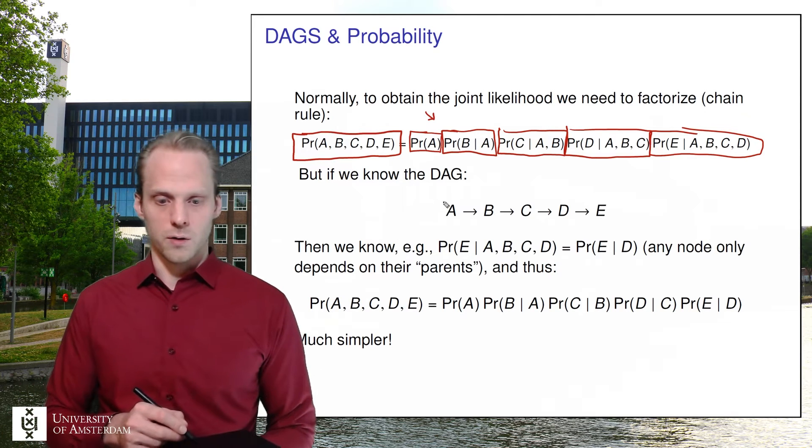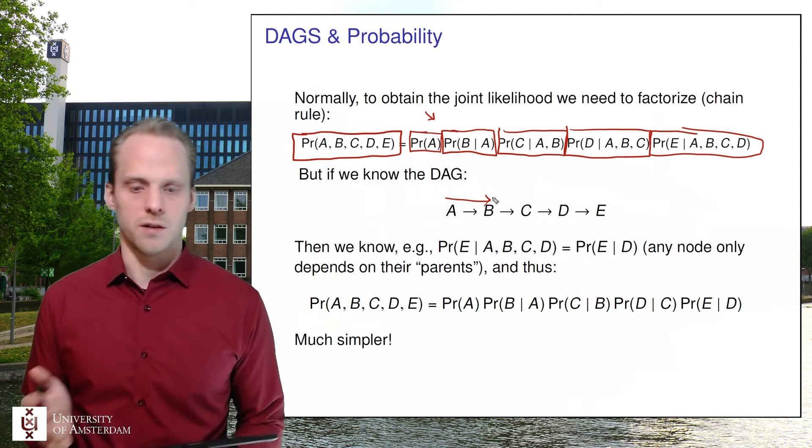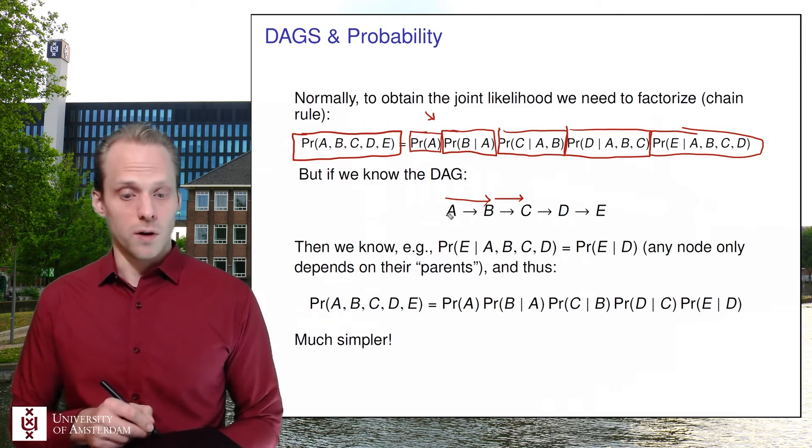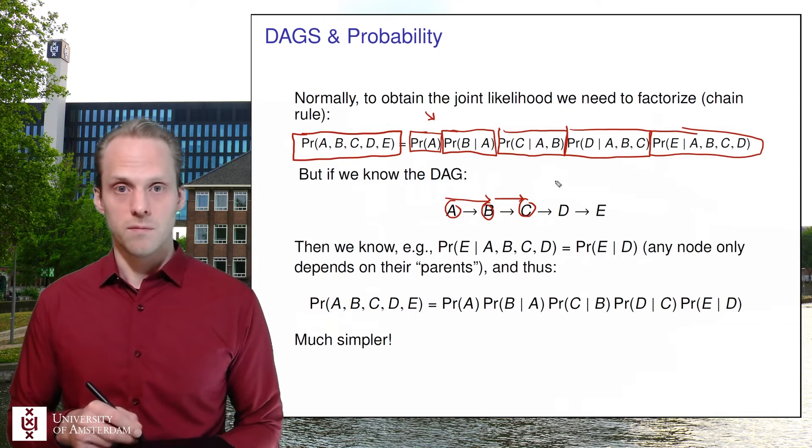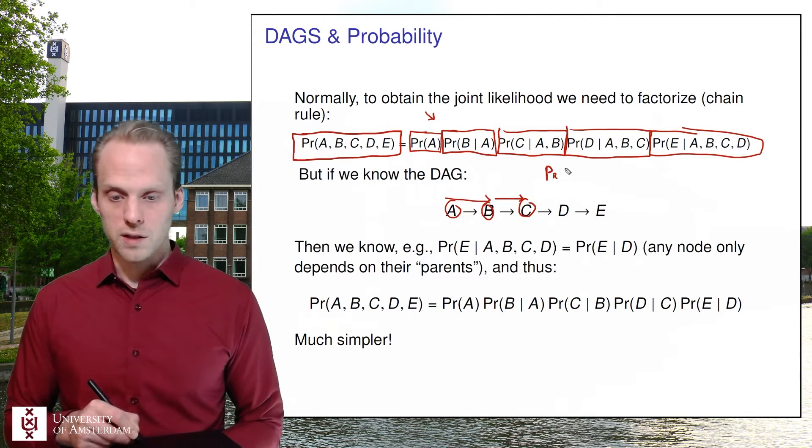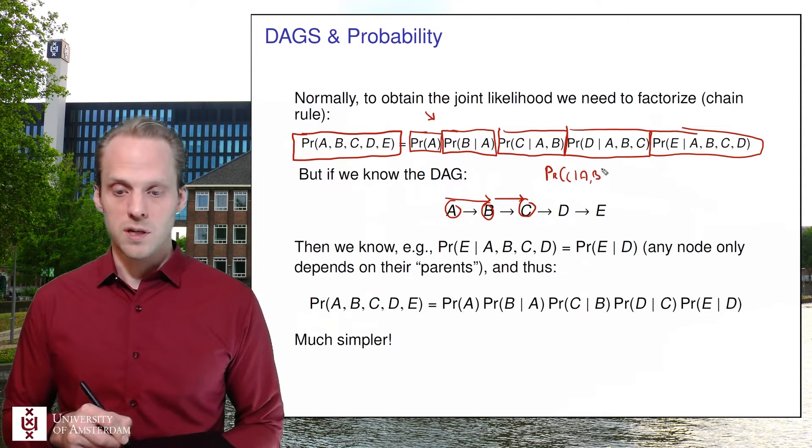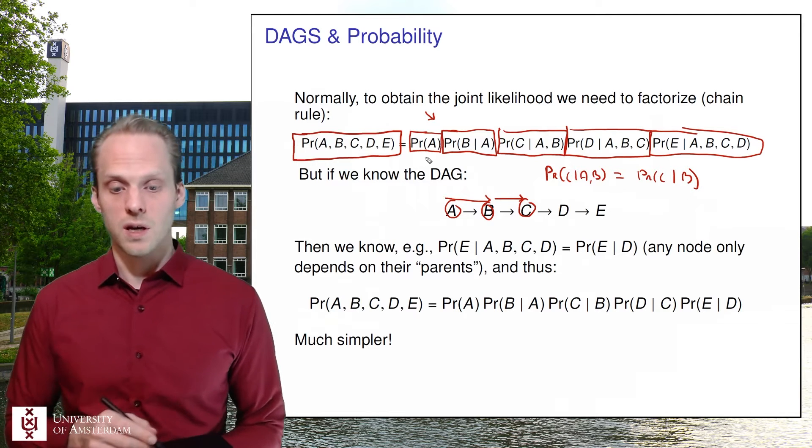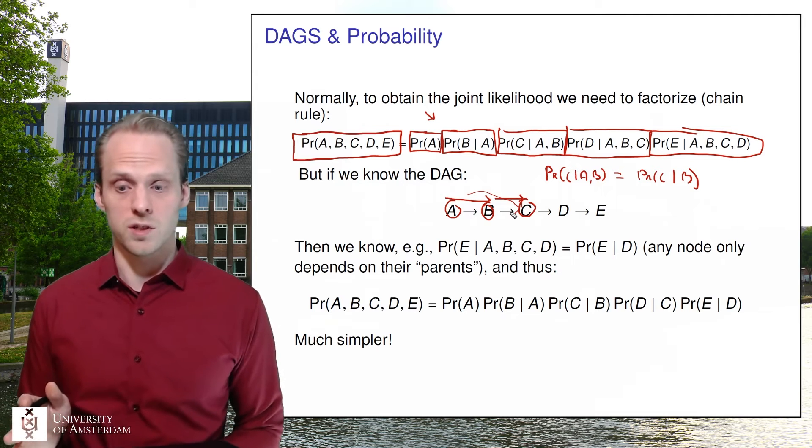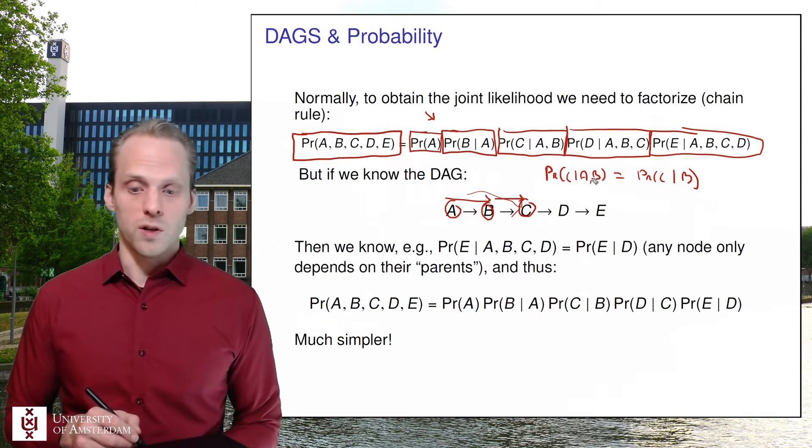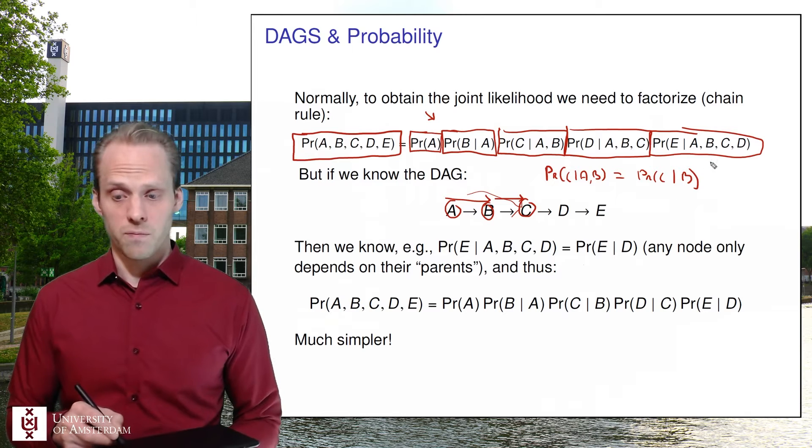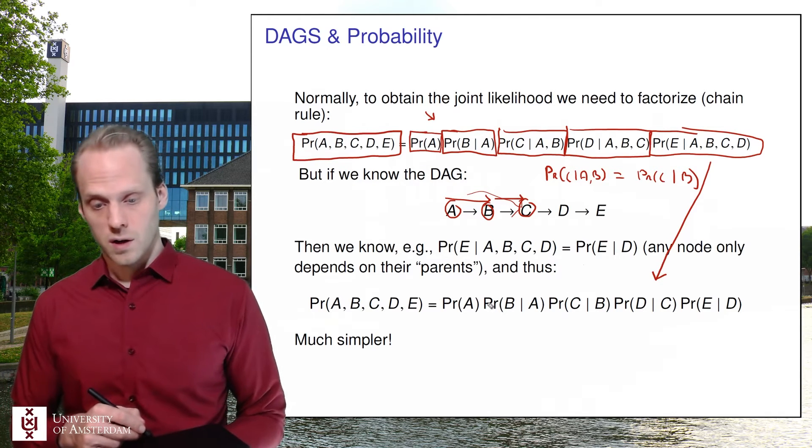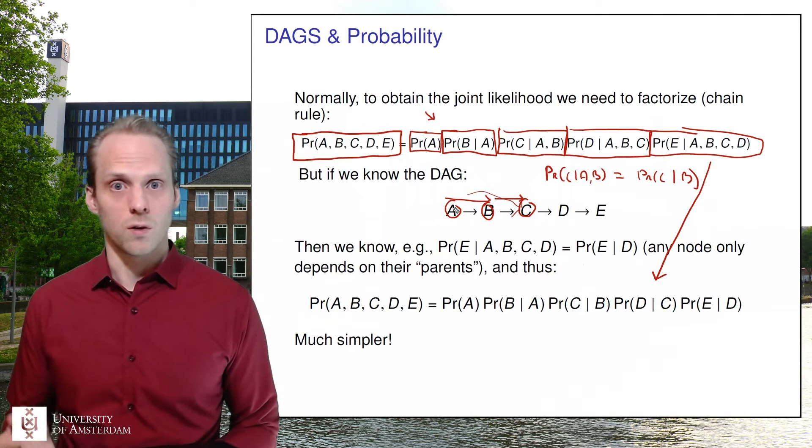But if we know the DAG, if we know that A causes B or we don't even need to say cause here, we can just say this is the way we describe the data and B, let's say causes, it's easier to say causes C, then we know that A and C are conditionally independent given B. So that means that the probability of C given A and B is the same as the probability of C given only B. Because if we know B, A has no longer any effect on C and no longer any correlation with C. So that means that the probability distribution of C, if we already know B, doesn't matter what A is.